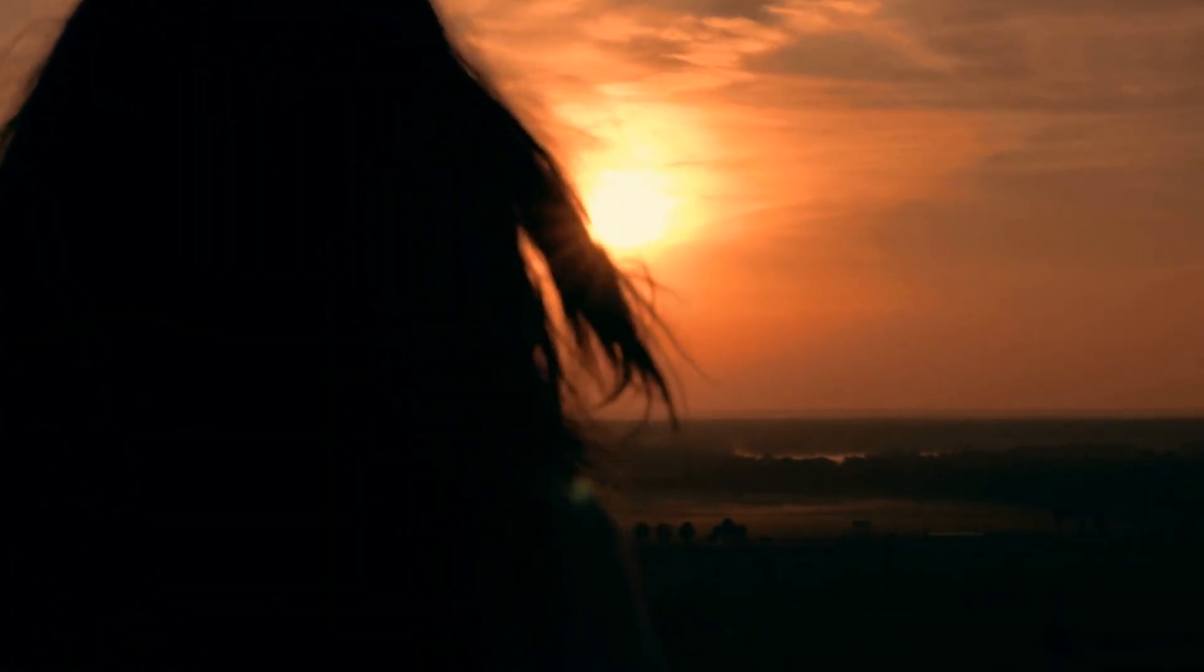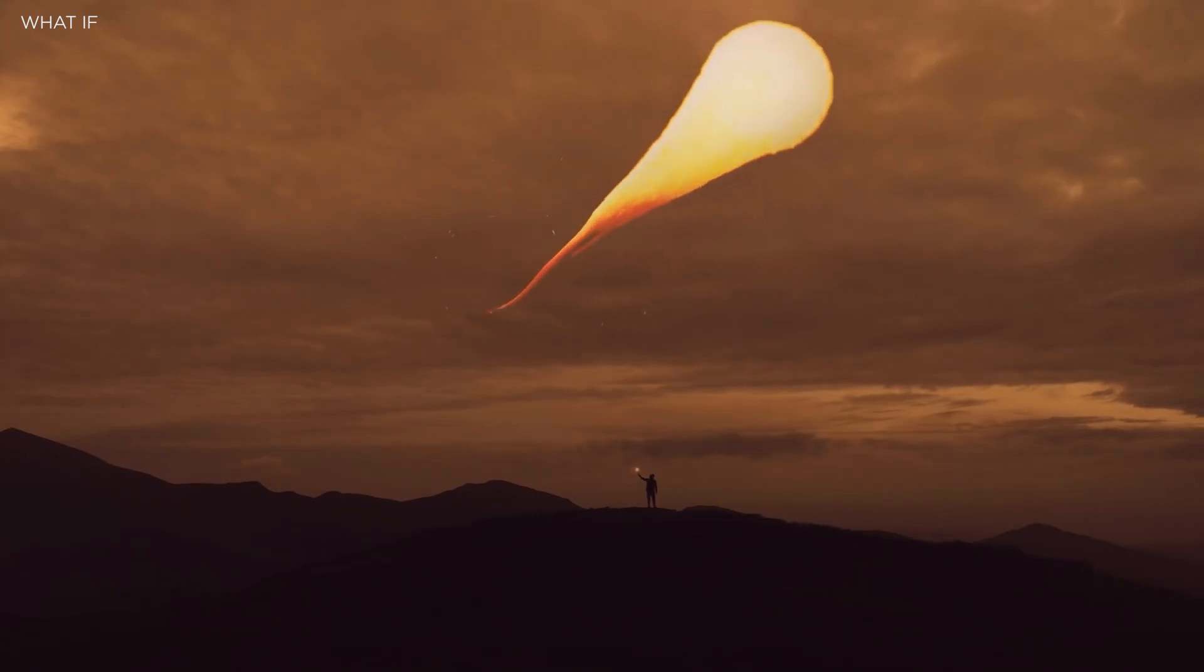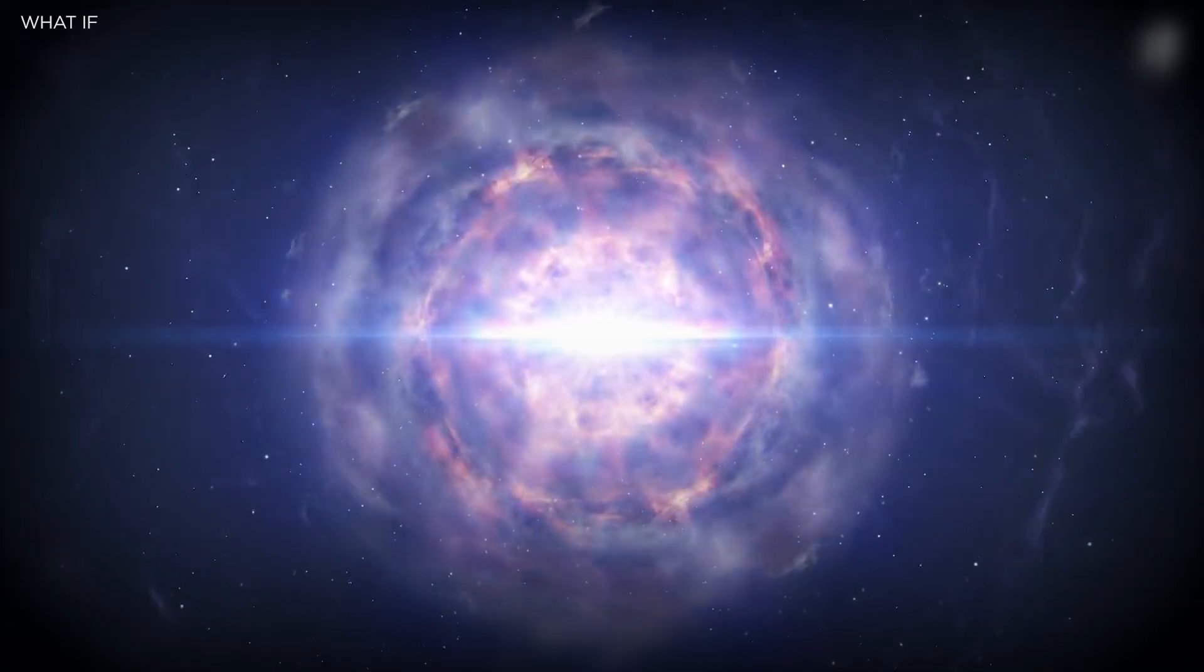If you're wondering what's going to happen to our sun when its fuel runs out, well, you don't need to worry too much. Small and medium-sized stars like our sun cannot form black holes. When they run out of fuel, they become small, planet-sized objects called white dwarfs.